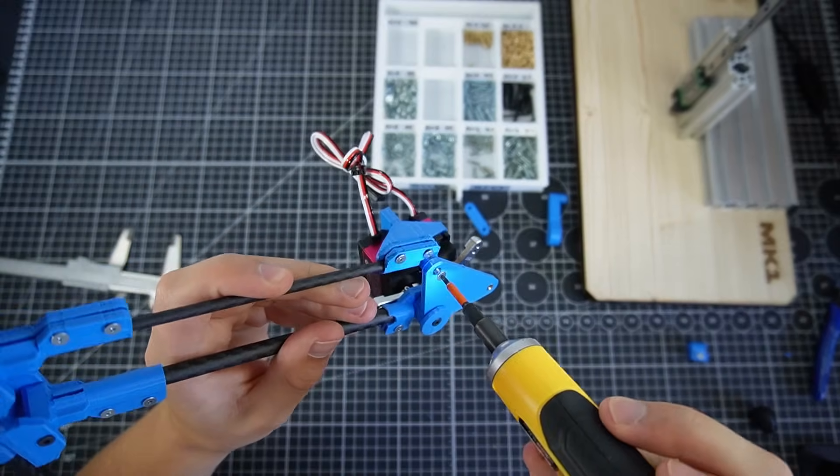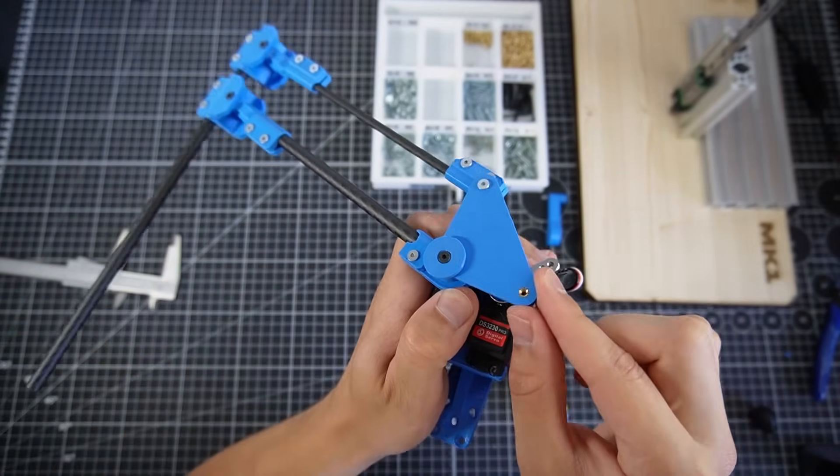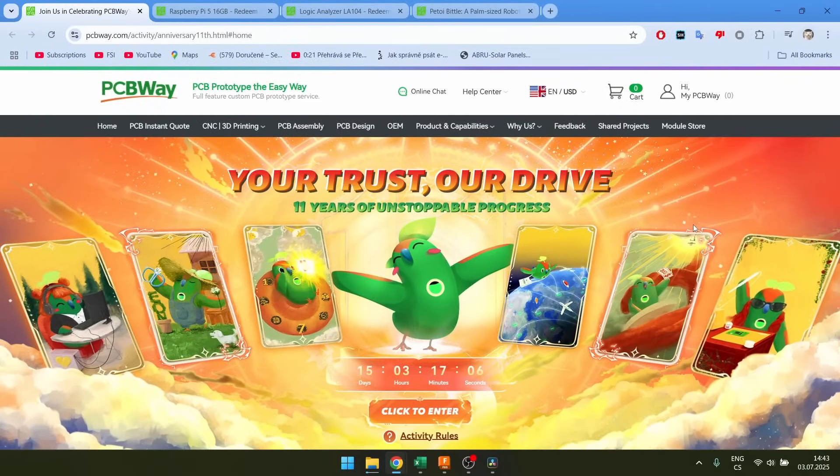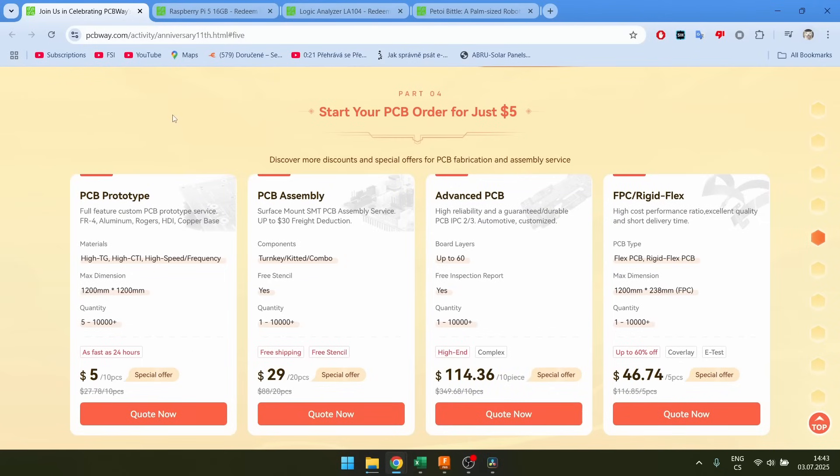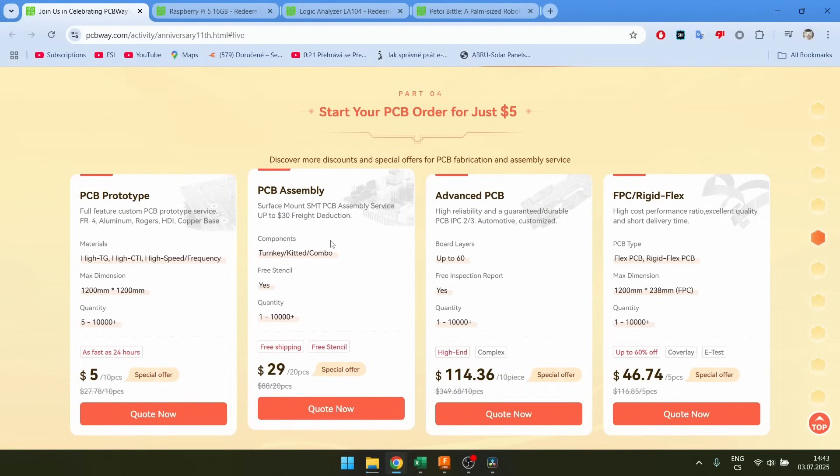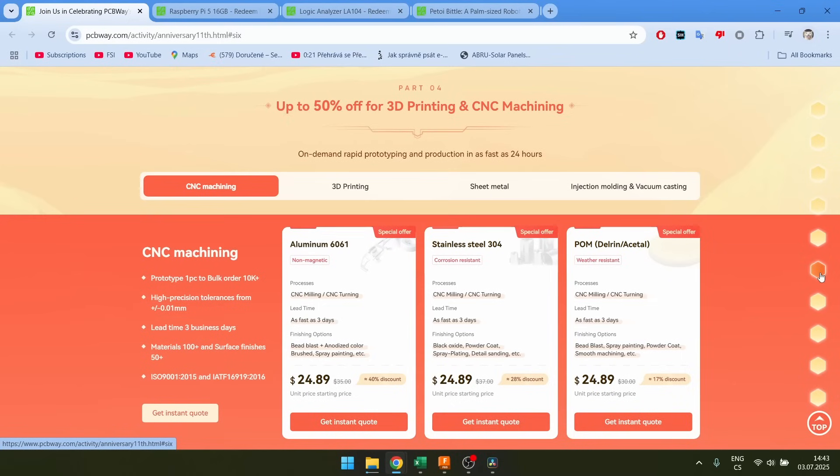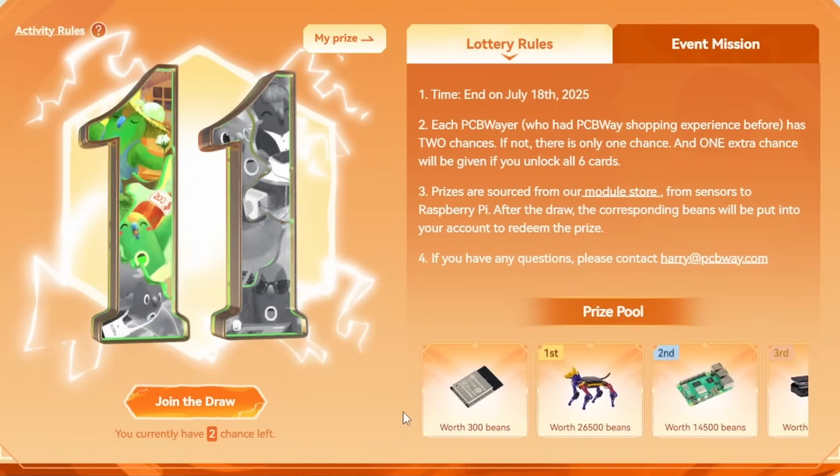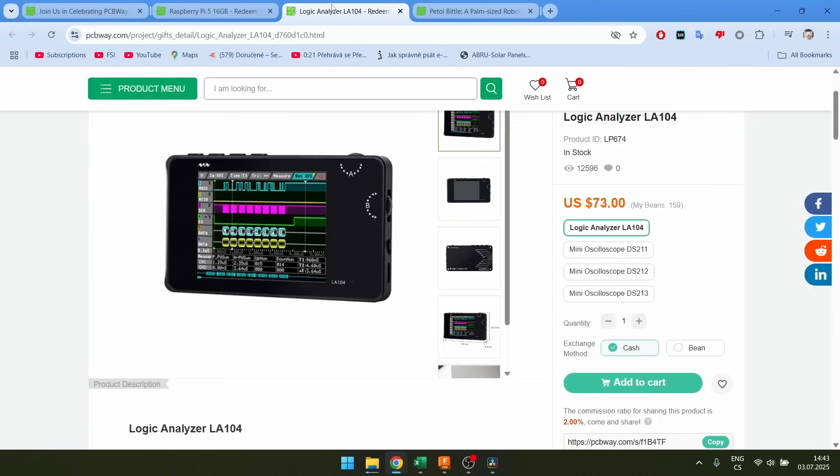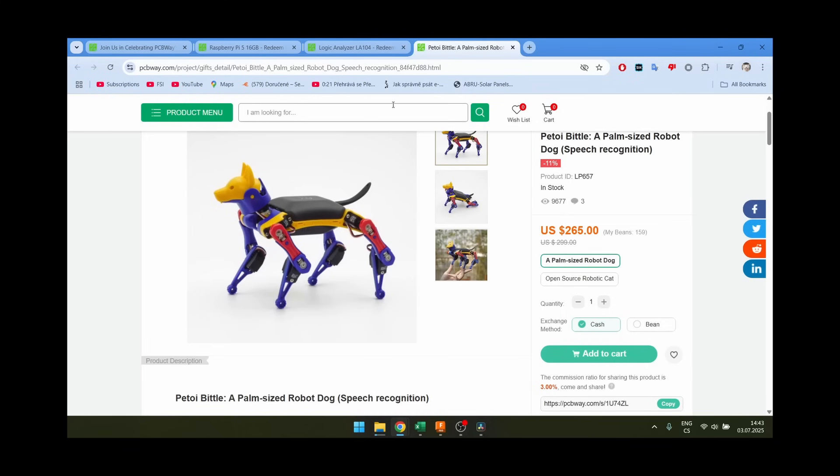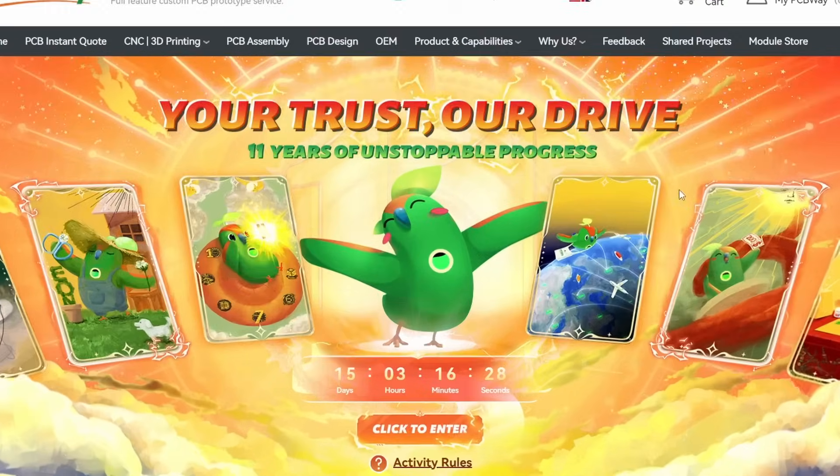Before we assemble the leg I want to show you my sponsor which I think you'll find useful. PCBWay is celebrating its 11th year anniversary and they are offering a bunch of discounts. There's discounts for PCBs and PCB assembly but also for manufacturing stuff like 3D printing and CNC machining. There's also this lottery with an interesting prize pool so you can win stuff like Raspberry Pis, oscilloscopes, and the first prize is actually a robot dog which is quite thick. So if you're making some projects now it's the time to buy.